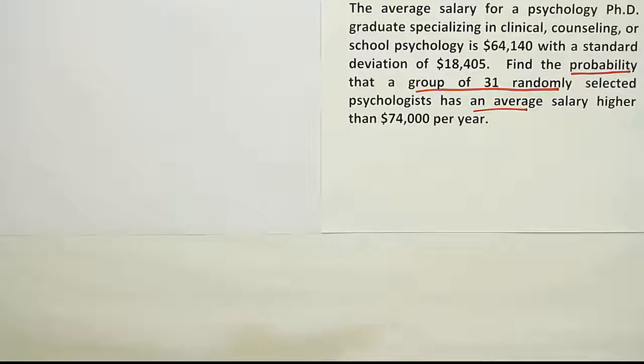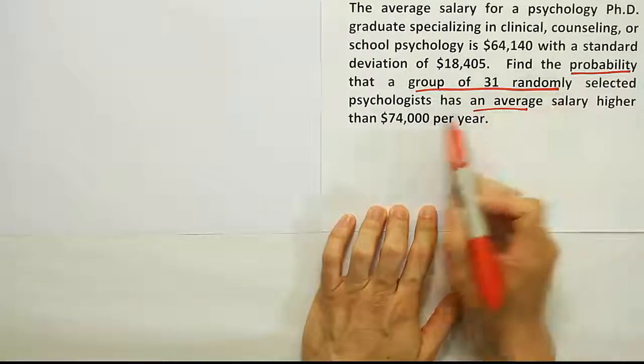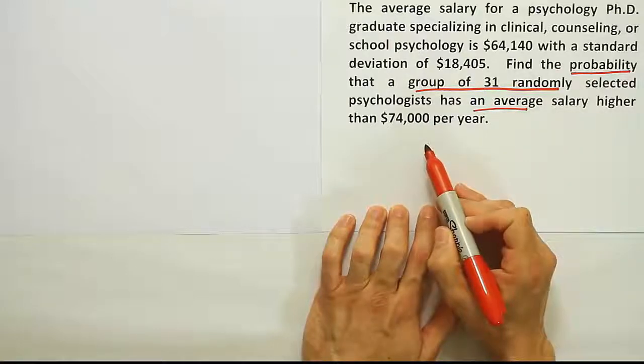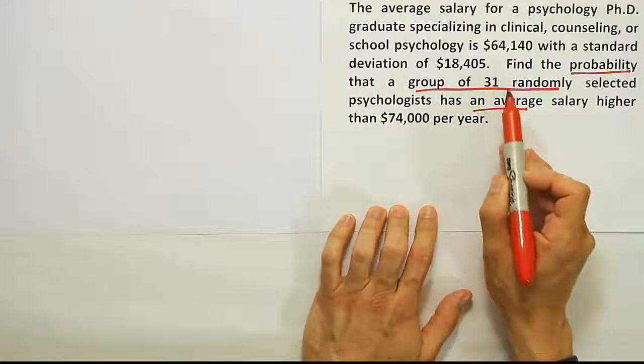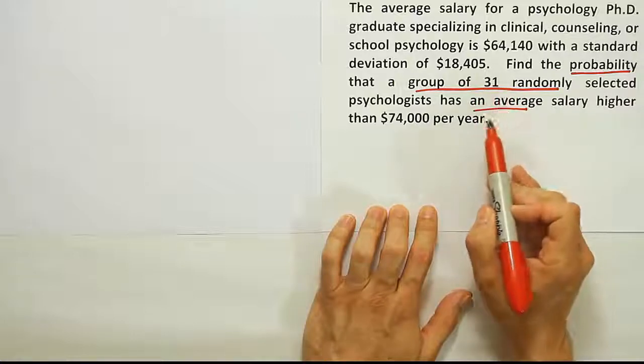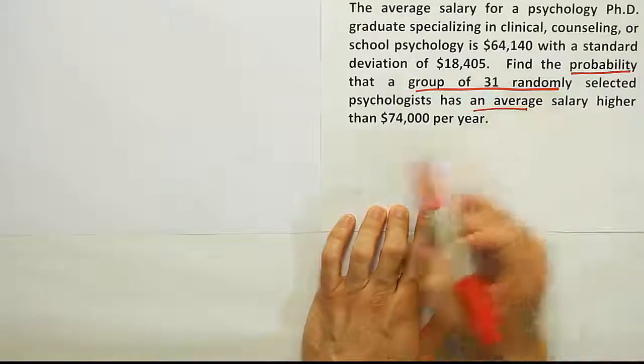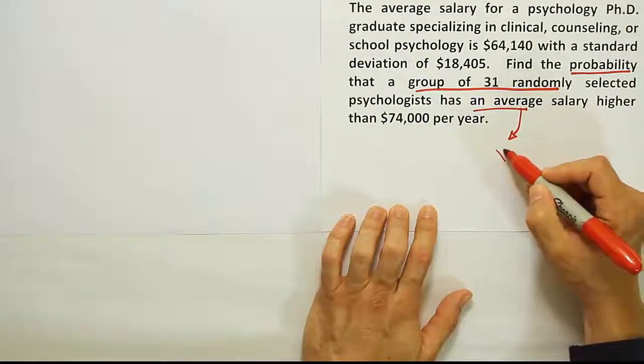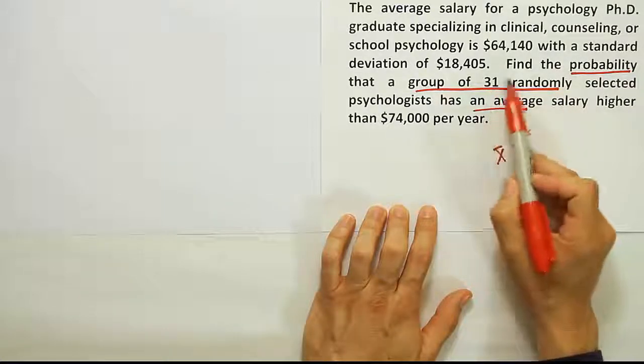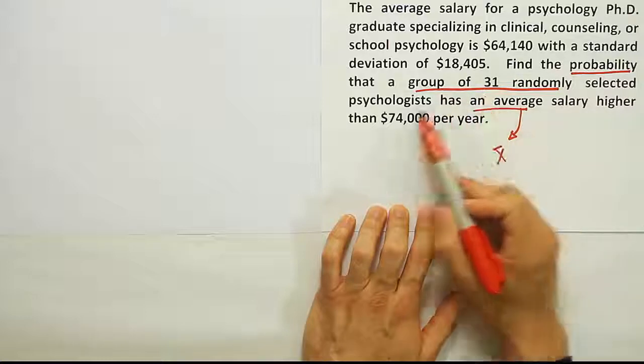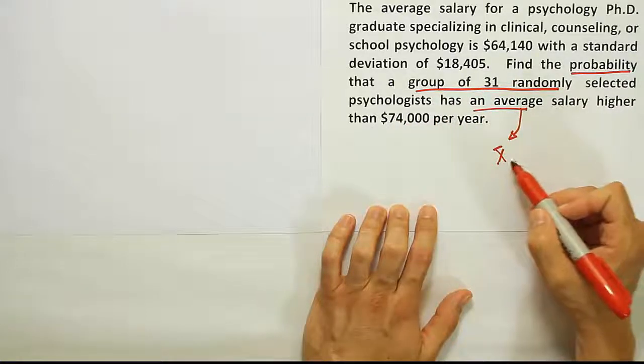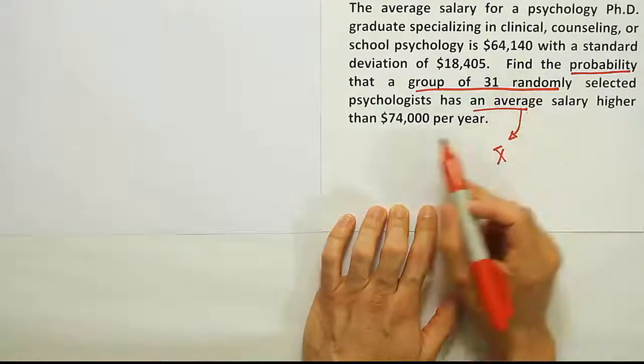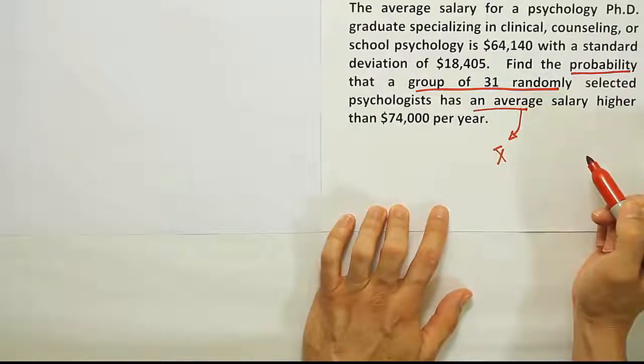So this is a probability problem, but it's not a probability problem for a single randomly selected psychologist with salary higher than $74,000. It's for a group of randomly selected psychologists and we're looking for their average salary to be higher than $74,000. This average is going to be our X bar, right? Because there's only 31 psychologists. There are certainly more than 31 psychologists in the world, right? So that means that this is a sample mean that they're talking about. They're looking for the probability that that sample mean would be higher than $74,000 per year.